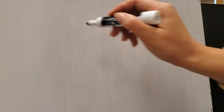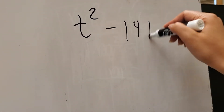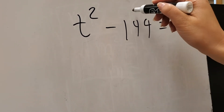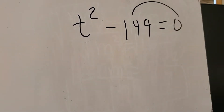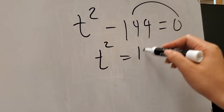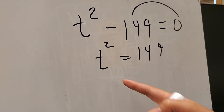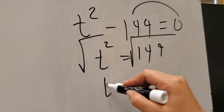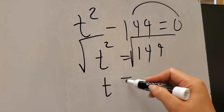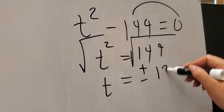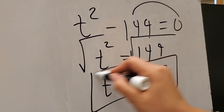Another example: if you have t squared minus 144 is equal to 0. Before you extract the square root, you need to transpose negative 144 to the other side, so that becomes t squared is equal to positive 144. You can now get the square root of both sides. The square root of t squared is t, and that is equal to positive and negative 12. So these are the values of t.